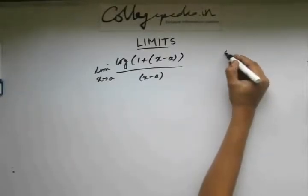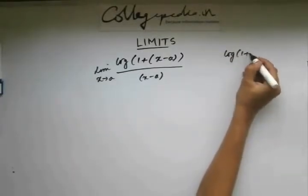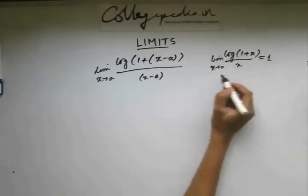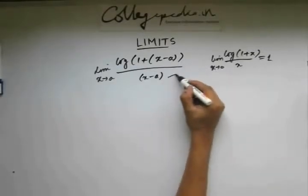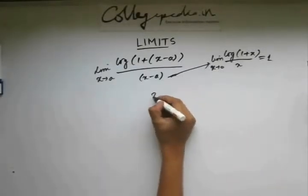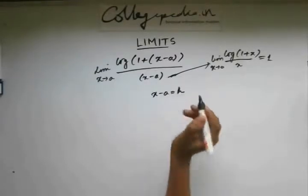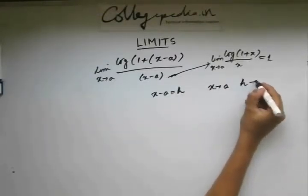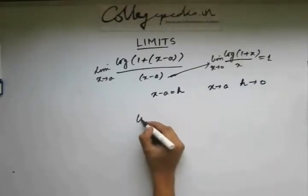You know that standard result is log 1 plus x by x, limit x approaches 0, is 1. So what I will do is I will try converting this limit to this form. Let's say x minus a equals h. So as x approaches a, you can see that h approaches 0.